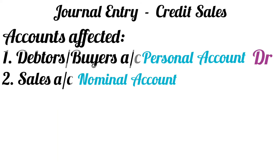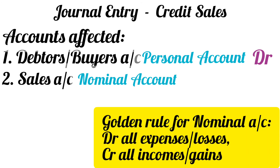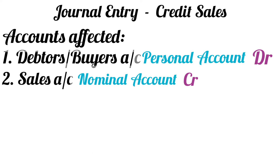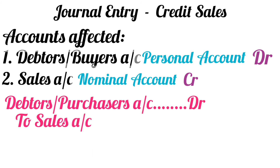Sales is a nominal account — it is an income. The golden rule for nominal accounts says debit all expenses and losses, credit all incomes and gains. So the sales account will be credited as it is our income. The final journal entry becomes: purchaser's or debtor's account debit to sales account.